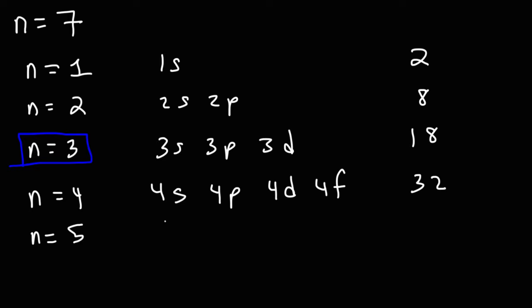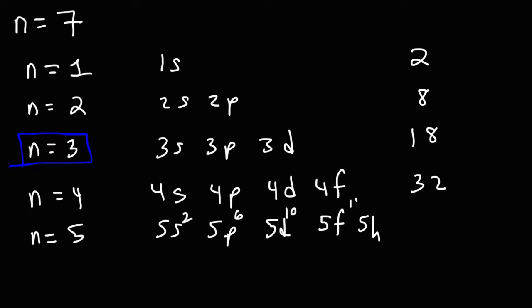For n equals 5, you have the 5s, 5p, 5d, 5f. I believe the next one is 5h or something. But whatever it is — s can hold up to 2, p up to 6, d up to 10, f up to 14 — notice the pattern: this is increasing by 4. So 14 plus 4 is 18, meaning h can hold up to 18. If we add 32 to 18, we get 50.